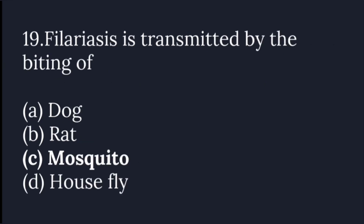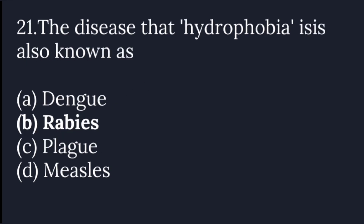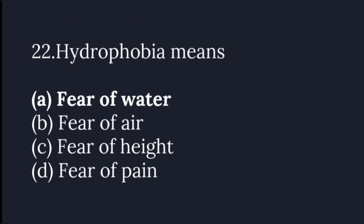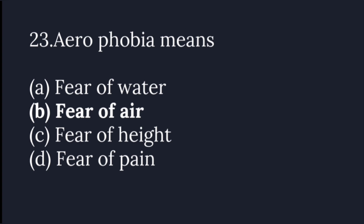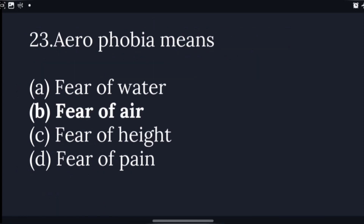Filariasis is transmitted by the biting of a mosquito. Rabies is transmitted by the biting of a dog. The disease hydrophobia is also known as rabies. Hydrophobia means a person will be scared of water — fear of water. Aerophobia means fear of air. Hydrophobia, intolerance to noise and bright light, slight fever and headache, and aerophobia are all symptoms of rabies.